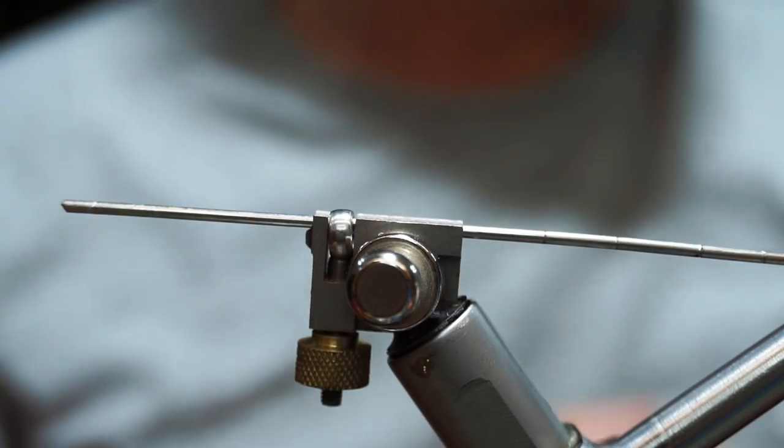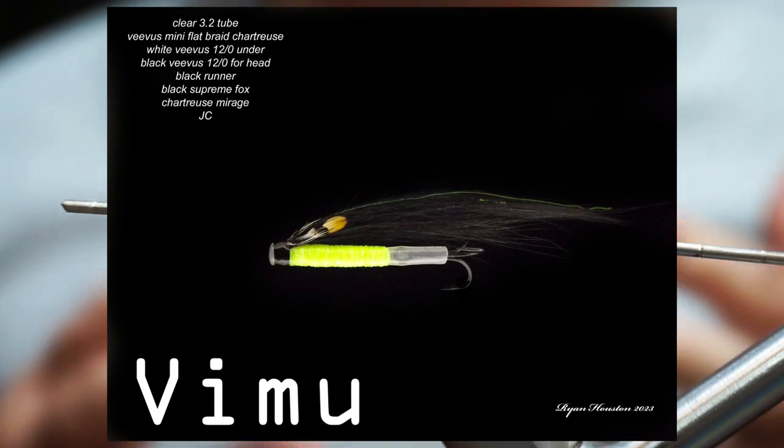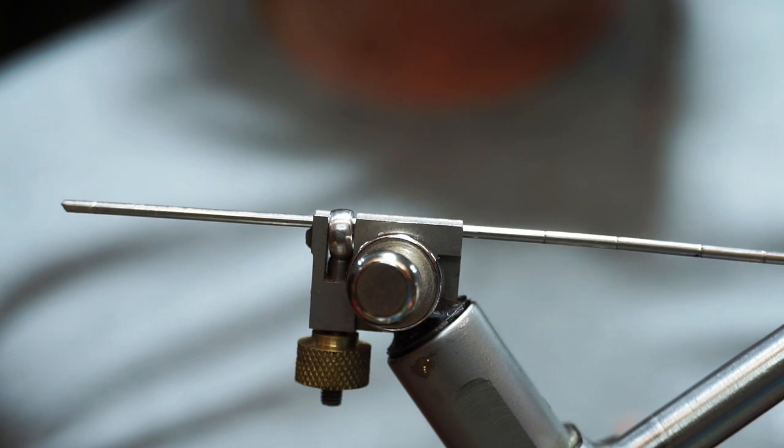Hi guys, so tonight we're going to tie a salmon fly. It's a Sunray variant and it's called the Vimoo. It's a simple enough looking fly but it's quite striking in its colors, black and chartreuse color scheme.